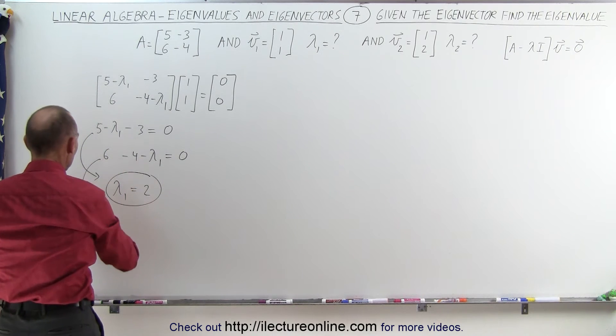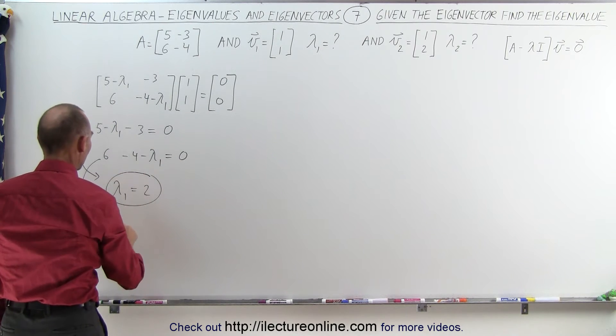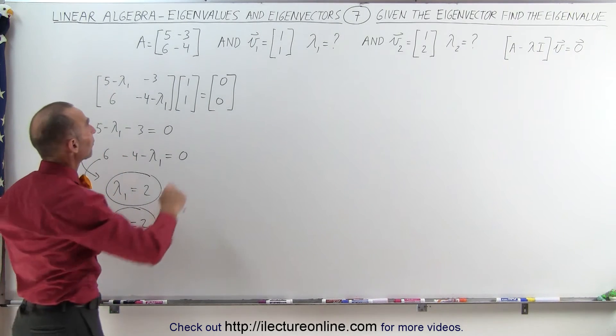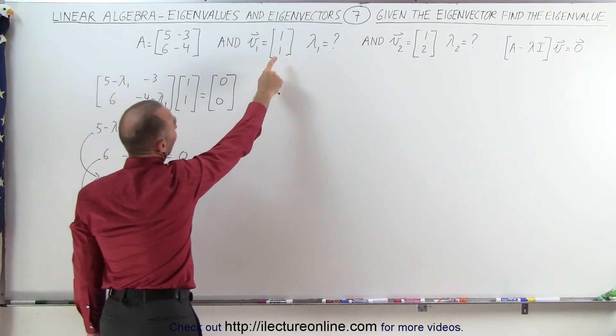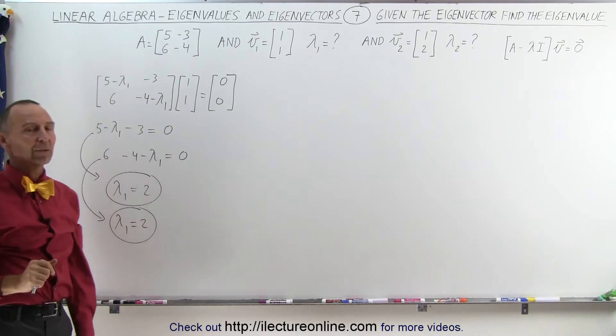Let's use the second equation and see if we get the same result. Moving that across, 6 minus 4 is 2, so yes indeed we get λ₁ equals 2. Both are consistent, which means that if we're given this matrix A and this eigenvector v₁, the associated eigenvalue is equal to 2.